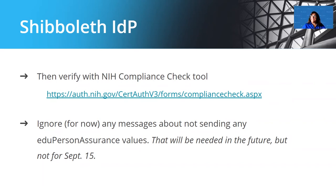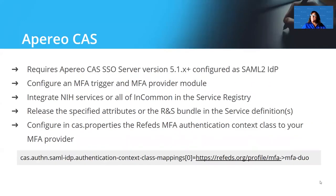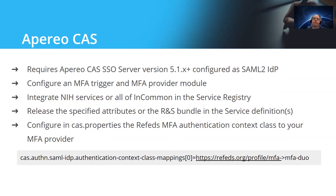Let's have Paul talk about CAS. The Apereo CAS SSO server also has this ability and roughly follows the same path we just talked about for the Shibboleth IDP. You need a relatively recent Apereo CAS server version — technically you can go all the way back to 5.1, but Unicon really suggests 6.3 or newer. Some of the supported community versions would be a lot better. We know it works; we've done it.